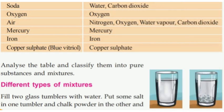Analyze the table and classify them into pure substances and mixtures. We have to classify pure substances and mixtures. What is the pure substance? Oxygen, Mercury, Iron, copper sulfate. What is the mixture? Sugar solution, soda, air, water.